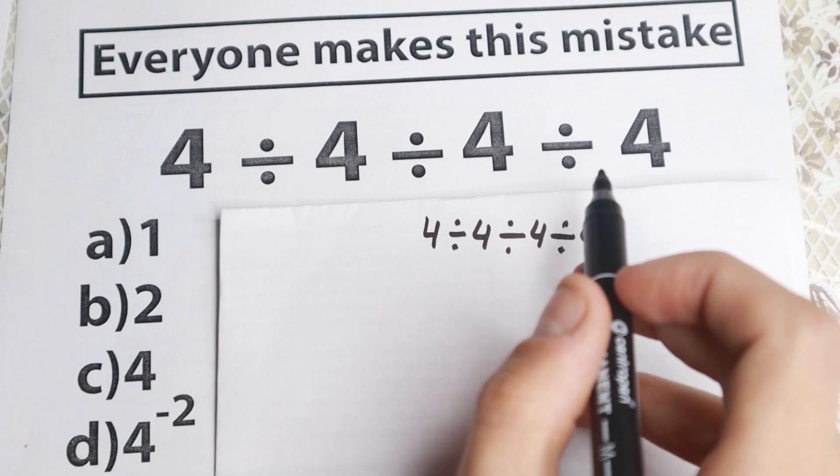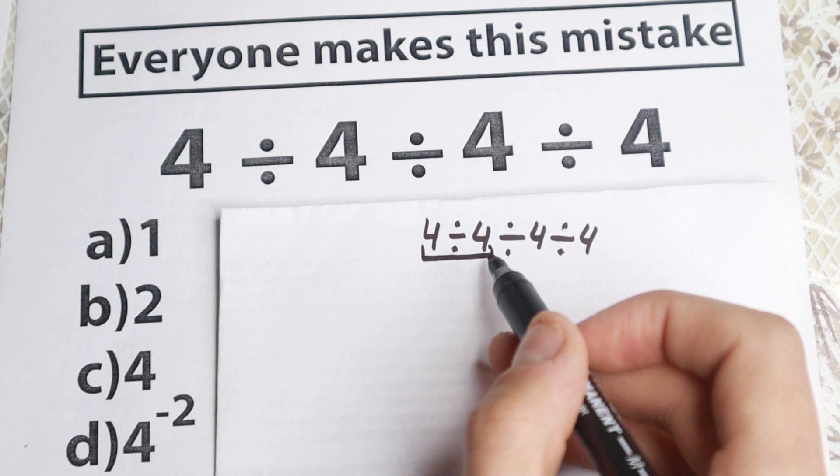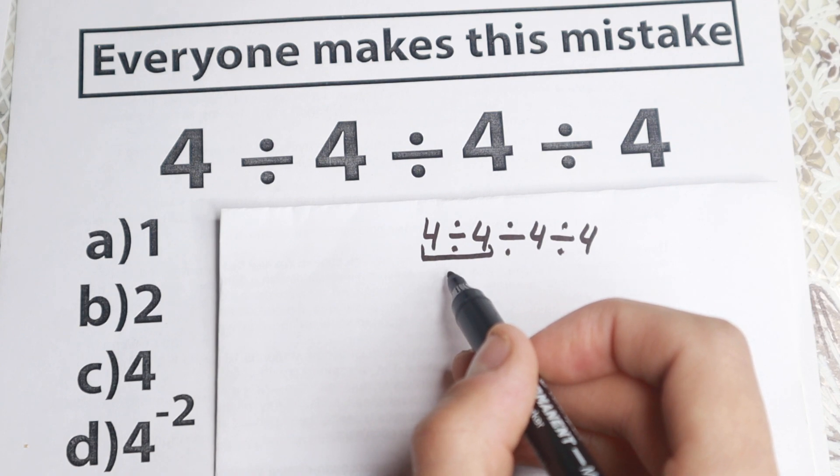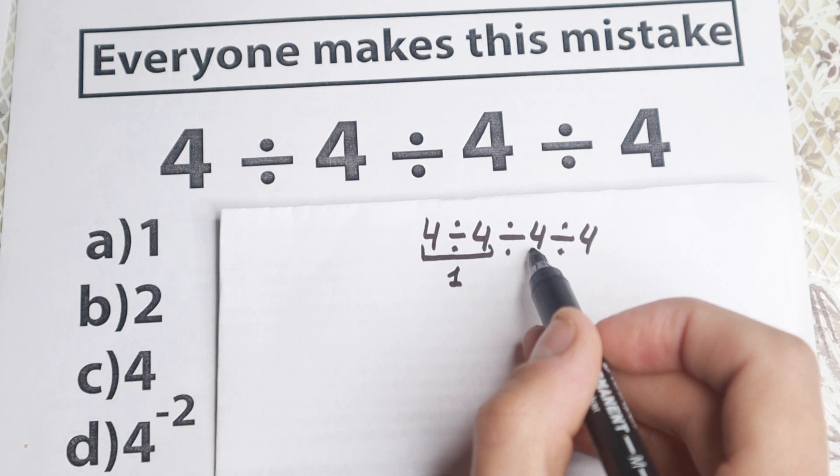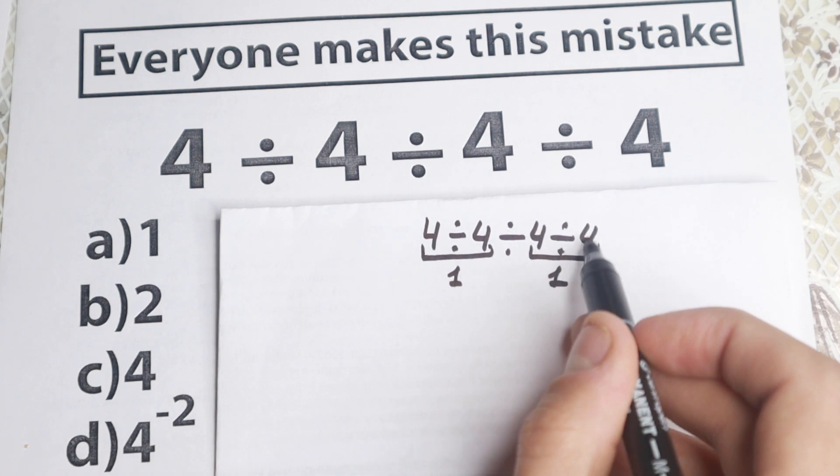And right now, take a look, a lot of students do this mistake. They start with the left hand side, so they divide 4 divided by 4, it will be equal to 1, and right here they go from the end. So 4 divided by 4, and the answer is 1 on the right hand side.